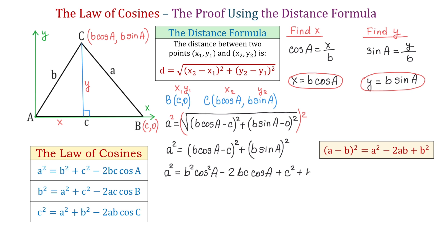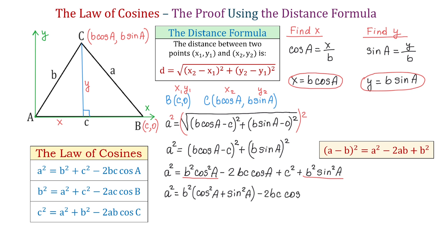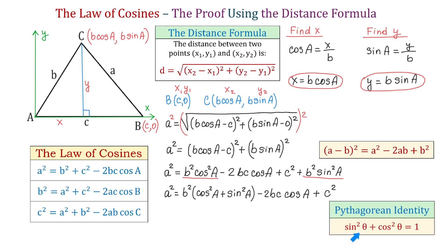For the second parenthesis we have B squared sine squared of A. Next, we group the first and last terms and factor out B squared, giving us B squared times (cosine squared of A plus sine squared of A), minus 2BC cosine of angle A, plus C squared. Inside the parenthesis we apply the Pythagorean identity: sine squared of theta plus cosine squared of theta equals 1. So the expression inside the parenthesis equals 1.